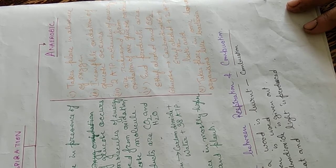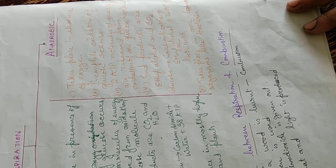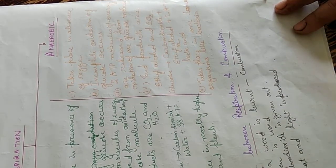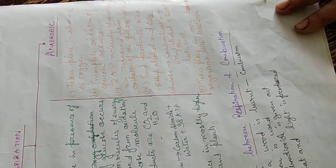In aerobic respiration, 38 ATP molecules are released from one glucose molecule. In anaerobic respiration, only 2 ATP molecules are released from one glucose molecule. The end products of aerobic respiration are carbon dioxide and water, whereas the end products of anaerobic respiration are ethyl alcohol and carbon dioxide.